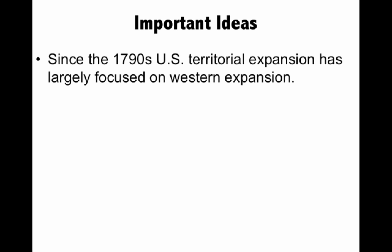Since the 1790s, U.S. territorial expansion has largely focused on Western expansion. We've been moving from the Atlantic to the Pacific coast, dealing with different countries like Mexico, Spain, England, and the various Native American groups, but something changes in the 1890s.